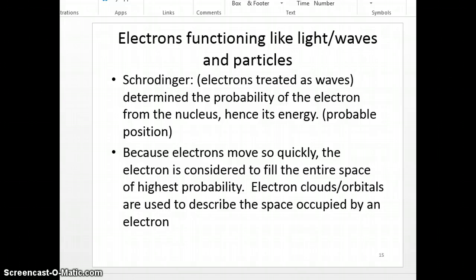Because the electrons move so quickly, the electron is considered to fill the entire space of highest probability. That space would be the electron clouds or the electron orbitals are used to describe it. So the space occupied by an electron, we call it the cloud or the orbital. And that's its probable position, what cloud or orbital it is in.